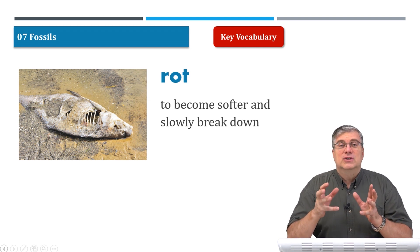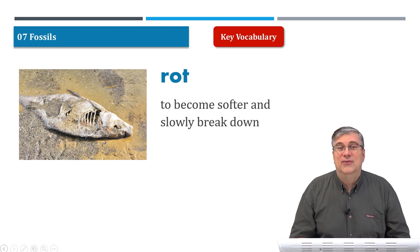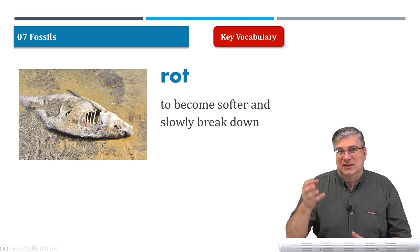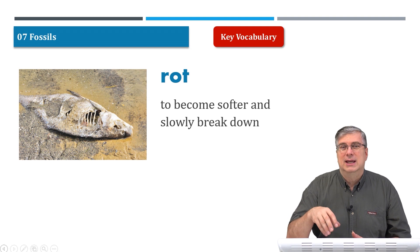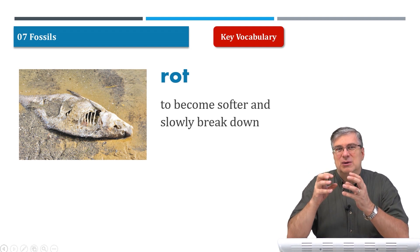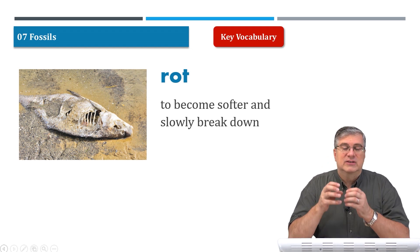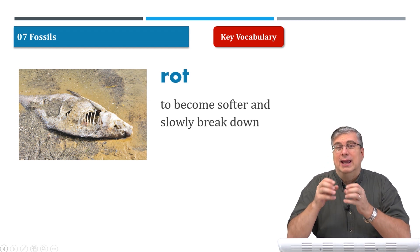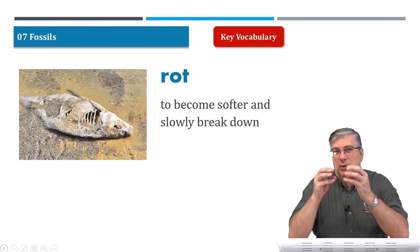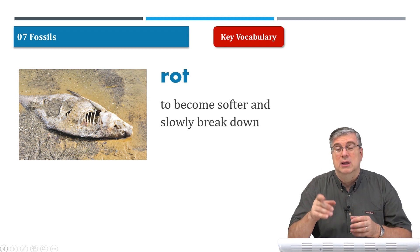'To rot' is a smelly word. When something rots, it becomes softer and slowly breaks down. Usually a dead thing will rot — like a dead fish on the beach. The sun hits it, the air makes it change, it slowly breaks down, it smells terrible.